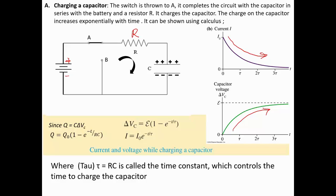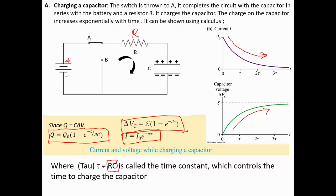The charging and discharging behavior is exponential and requires differential equations to derive mathematically, which we won't go into detail here. The charge on the capacitor as a function of time increases exponentially, and there are corresponding formulas for voltage and current. The key constant here is the product R×C, called the time constant — an important time scale for the circuit that controls how fast or slow the capacitor charges or discharges.